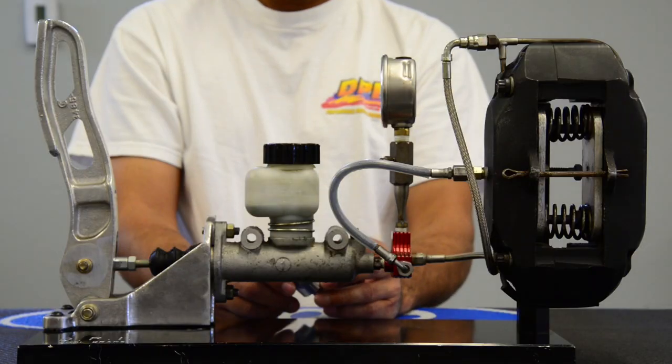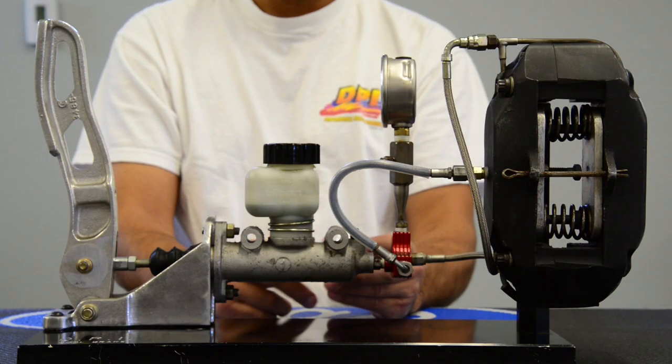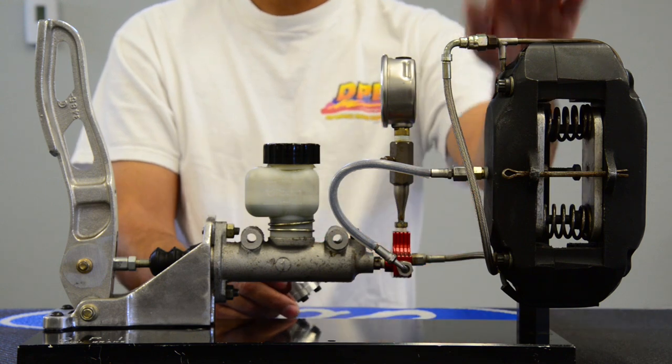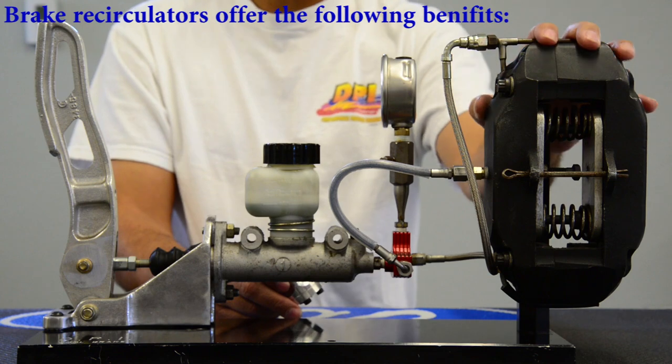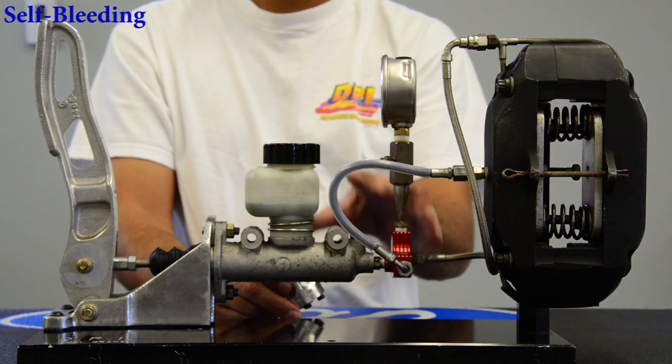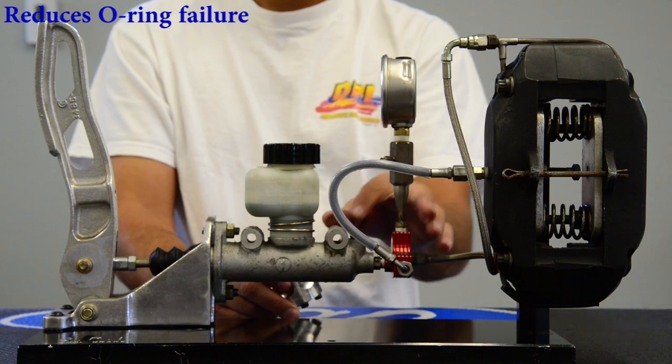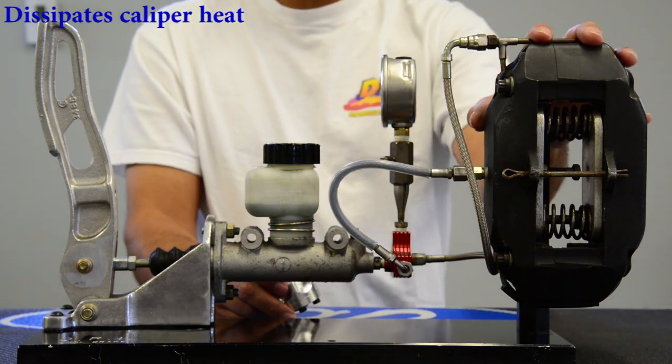Welcome back to DPI. DPI has come up with some different types of brake recirculators. The neat thing with these brake recirculators is you've got to get the hot fluid out of your caliper back into the master cylinder to keep fresh fluid in there so you don't boil the fluid.